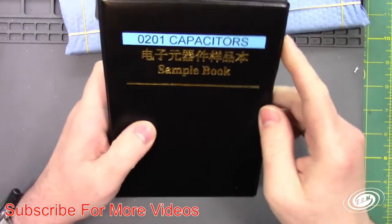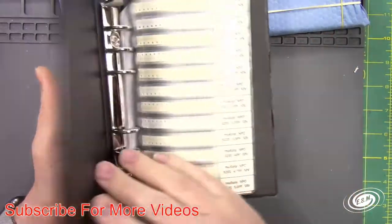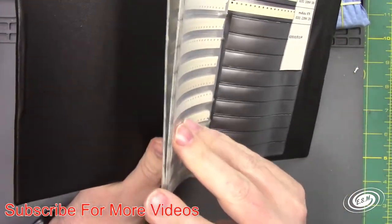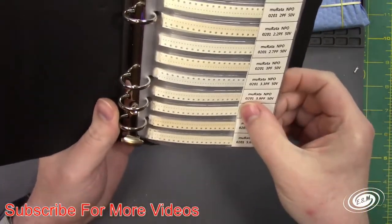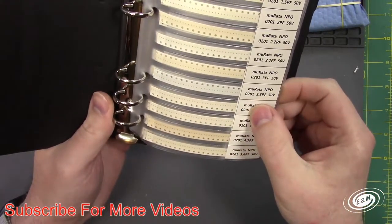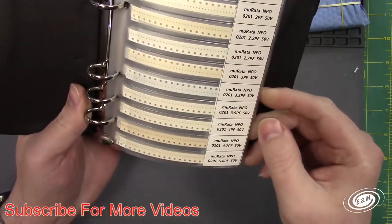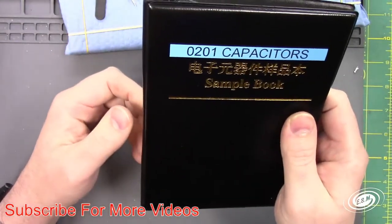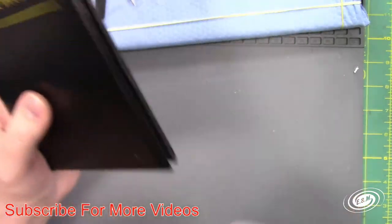And then I also got a set of these component books from a friend of mine. They're sample books. They have all the different values of capacitors and things like that. This is O2, O1, 50 volt rated capacitors. And then I also have 402, 603, 805, and 1206 books.